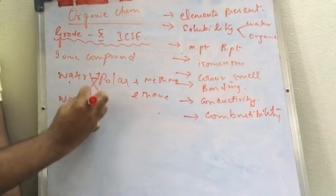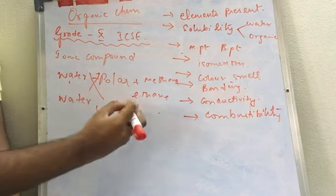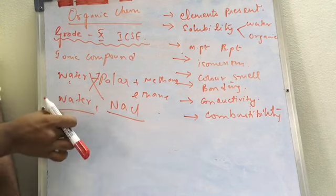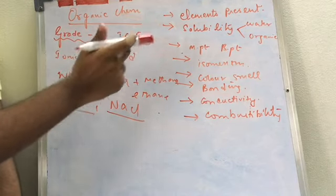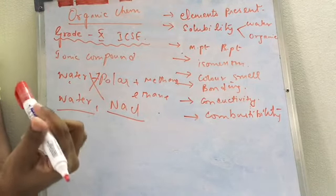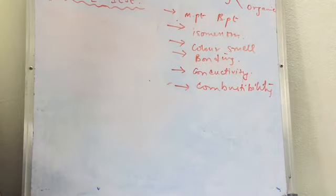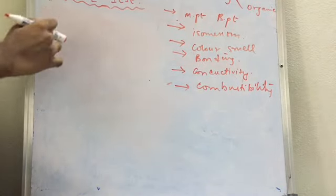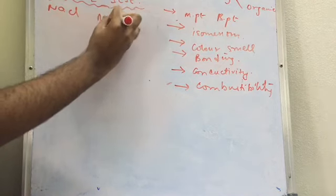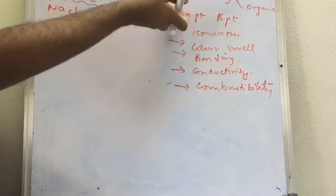When you take water and NaCl, 'like dissolves like' is applicable because the bonding in NaCl and the bonding in water are both the same. So NaCl can be dissolved in water. The conclusion is that organic compounds cannot be soluble in water. As discussed, ionic bond is present in NaCl, while covalent bond is present in methane, and you know the consequences of bonding in terms of solubility and melting point and boiling point.